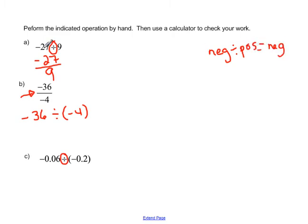So let's go ahead and do this problem. Negative divided by a positive, we know is negative. And 27 divided by 9, we know is 3. So our final answer is negative 3.